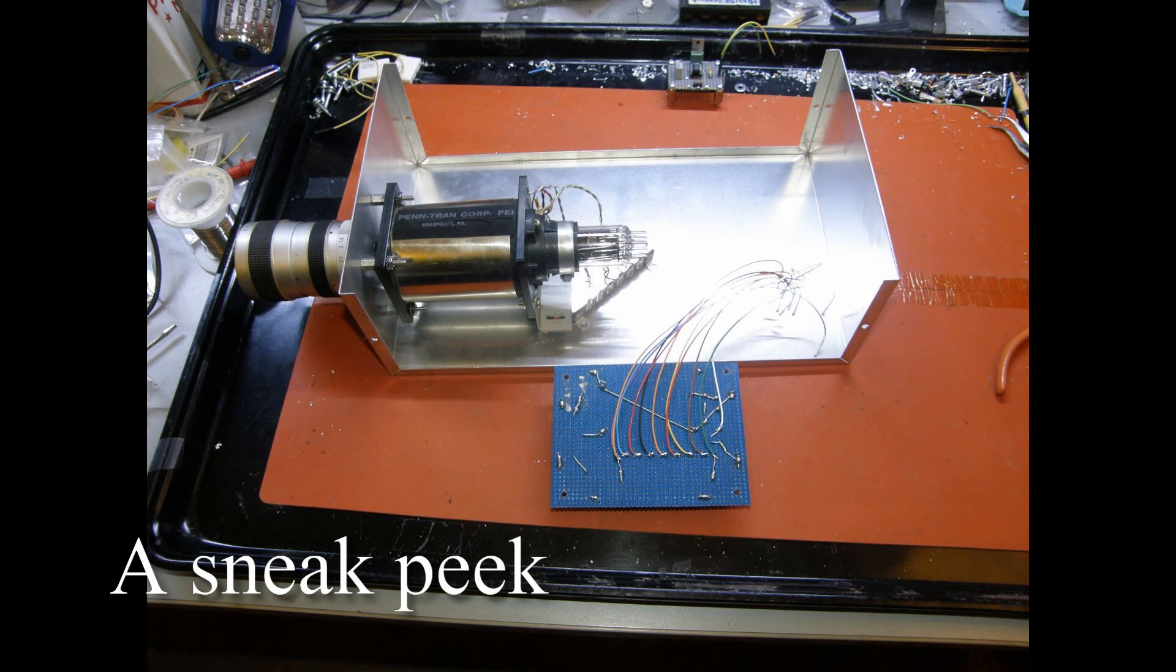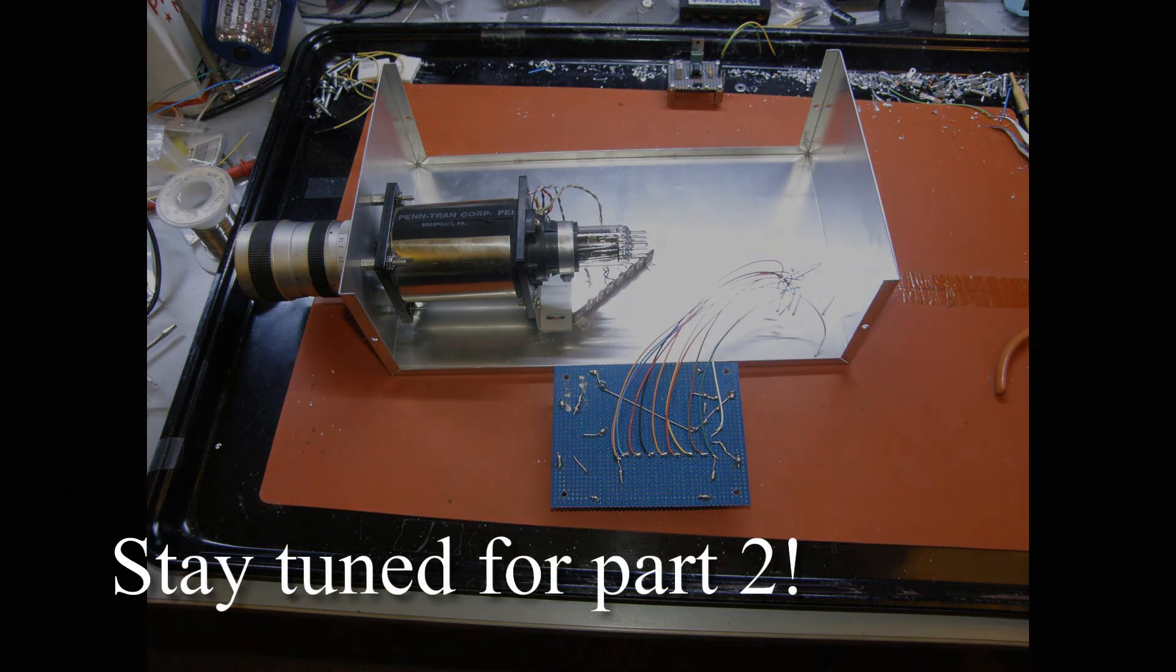In part two, we'll concentrate on moving the camera tube and deflection yoke into a nice new shielded enclosure that will act as a Faraday shield blocking the noise.